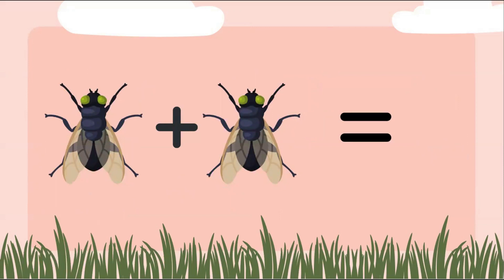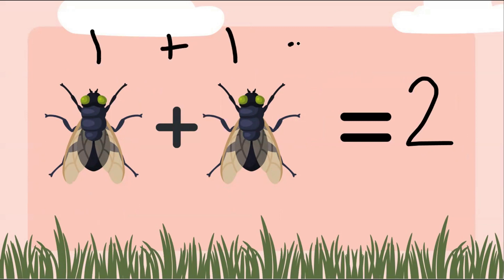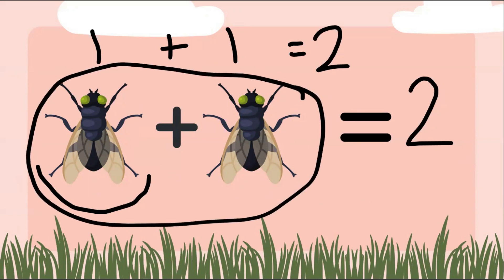Here's an easy one — can you solve this on your own? I'll give you a minute. Good job! The answer is two. One plus one equals two. We have one bug friend, then he wanted to hang out with his friend, so now we have two bug friends.